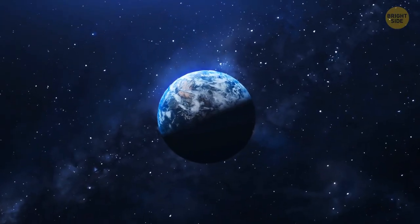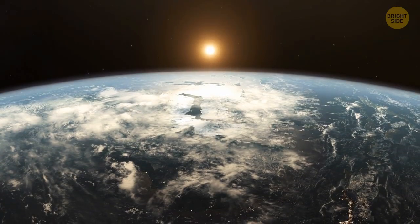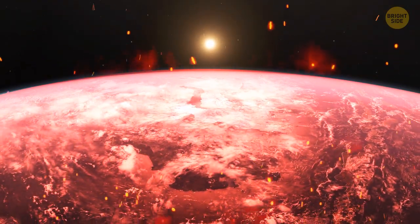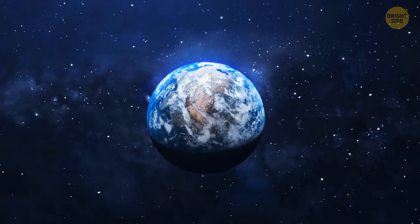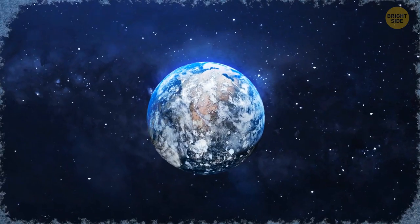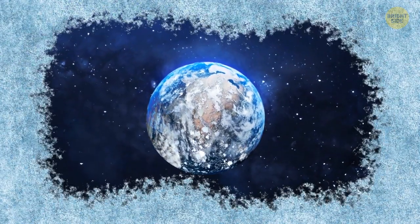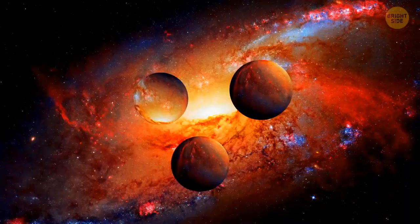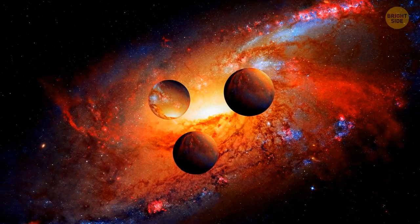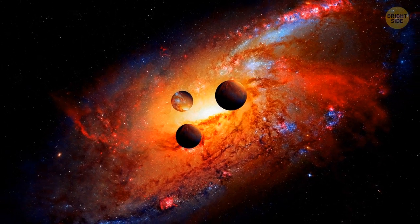If Earth chose the first option, our main star's insane temperatures would probably wipe all living beings off the face of the Earth in no time. If it was the second scenario, we'd probably freeze, since Jupiter, as a dim red dwarf, wouldn't be able to warm us up well enough. But there could be one more option. The inner planets could get thrown out of the solar system altogether.